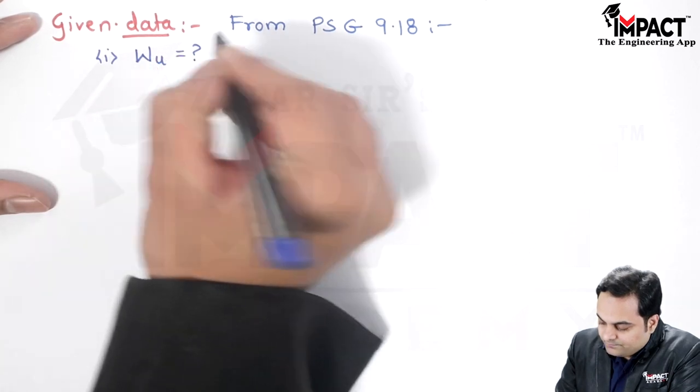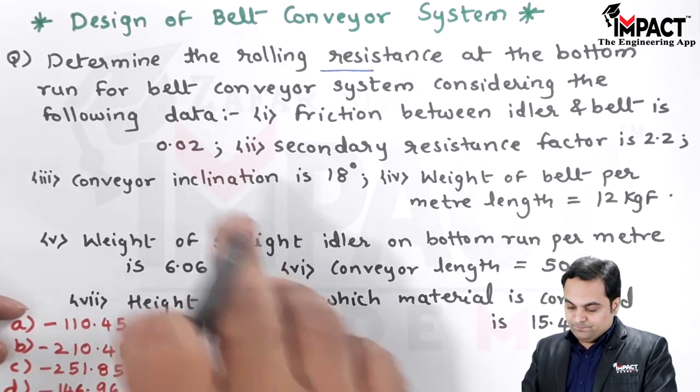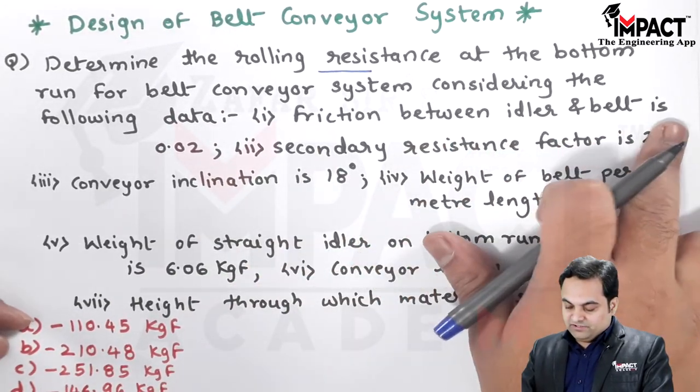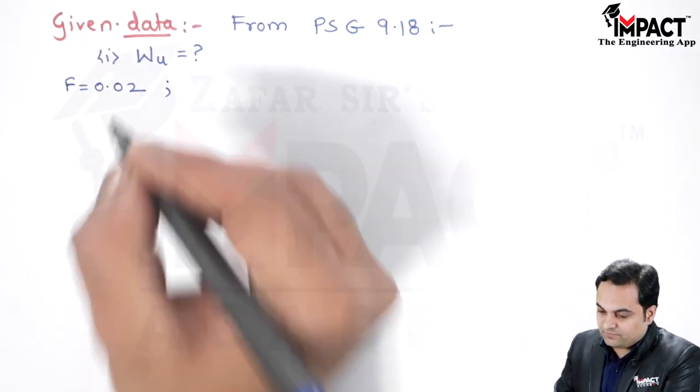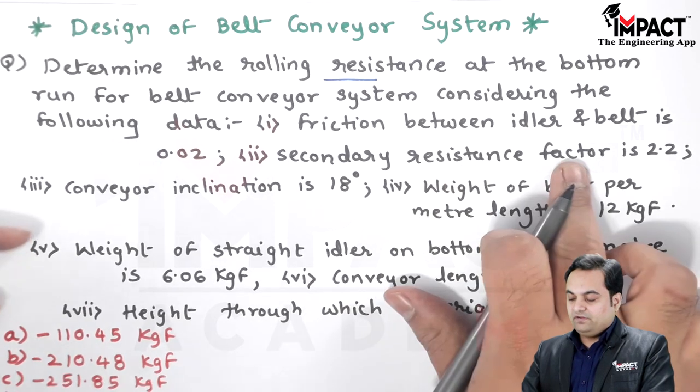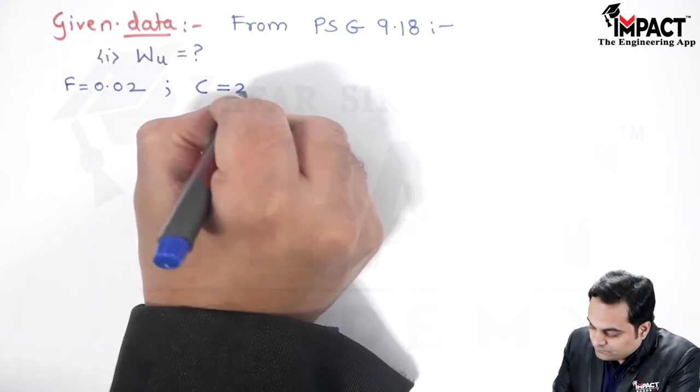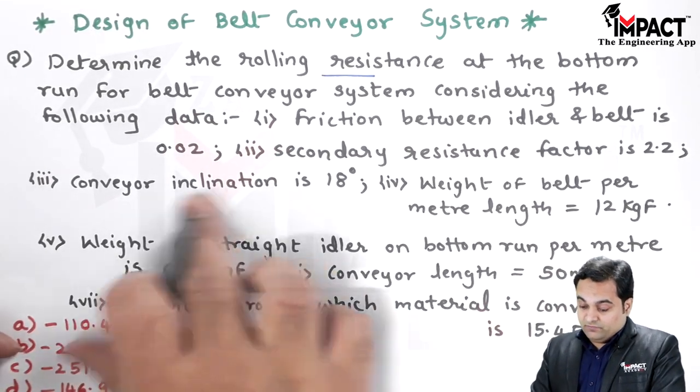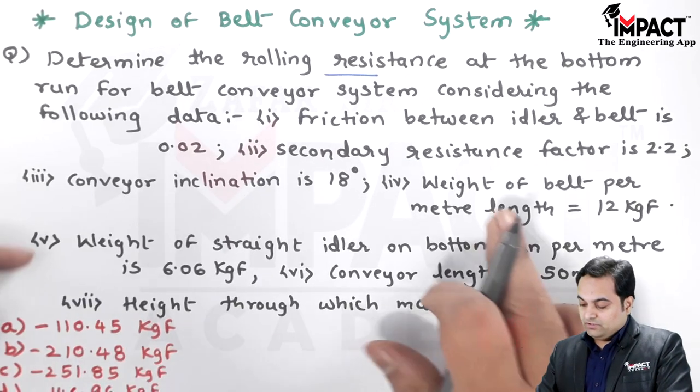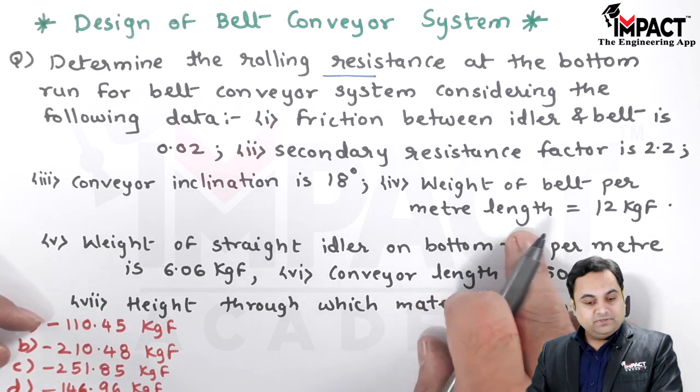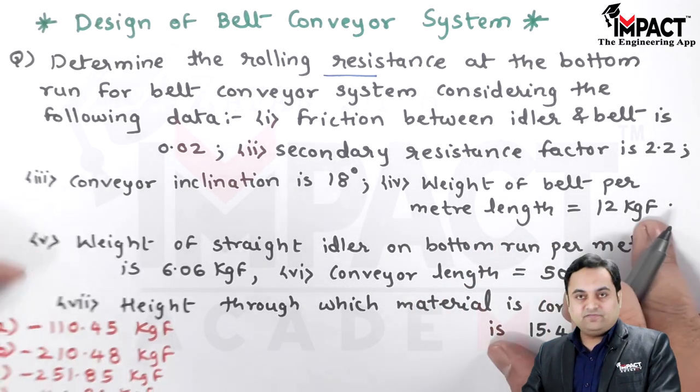Now the data which has been given to us: the friction between the idler and the belt is 0.02, denoted by small f. The secondary resistance factor is given as 2.2, denoted by capital C. The conveyor inclination is 18 degrees, denoted by delta. The weight of the belt per meter length, denoted by G suffix b, is 12 kgf.